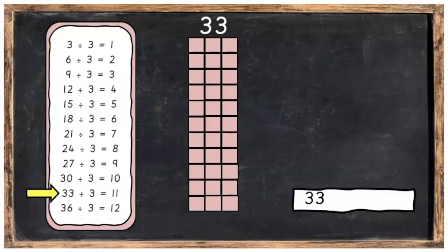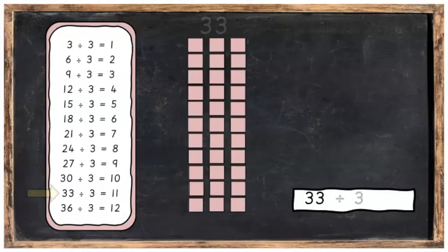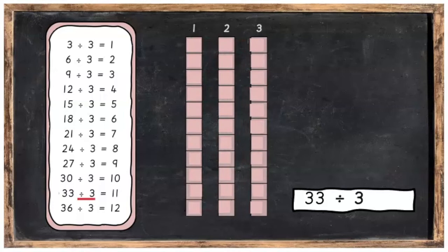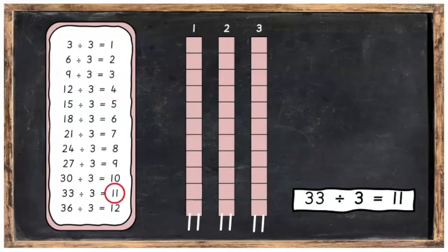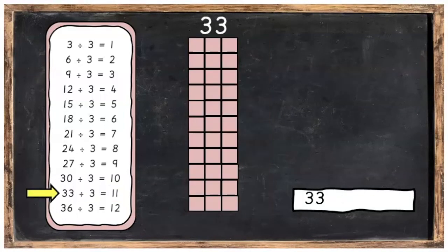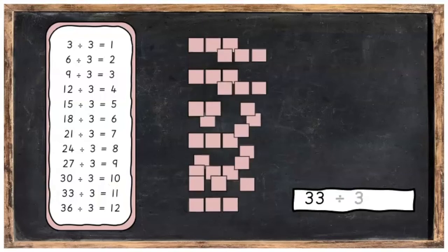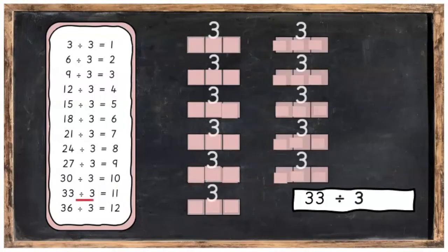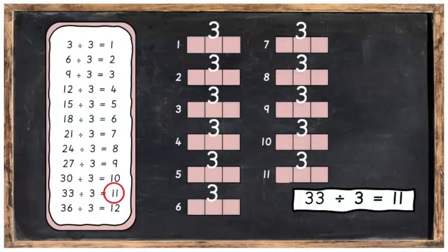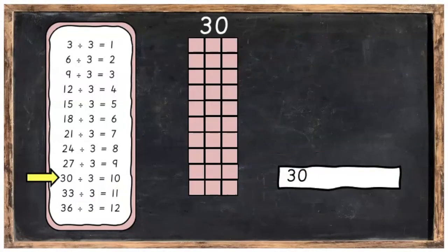Next one: 33 divided into 3 equal parts, there's going to be 11 in each part. We can also say 33 divided into 3's and you're going to get 11 groups of 3.